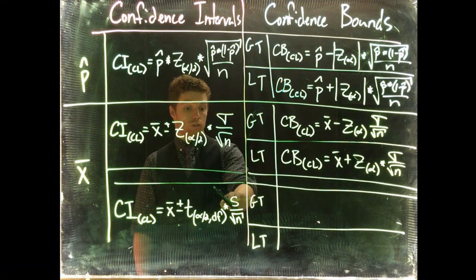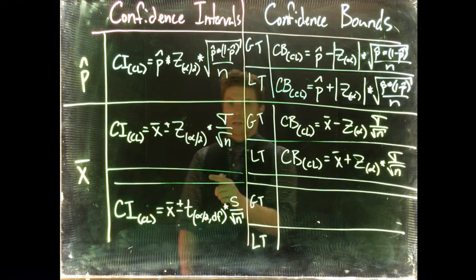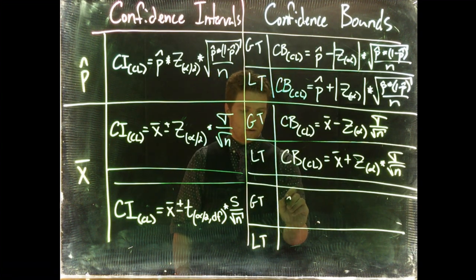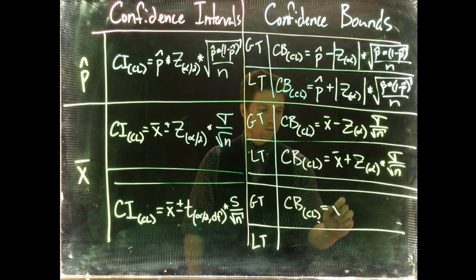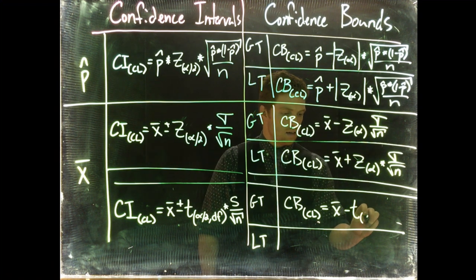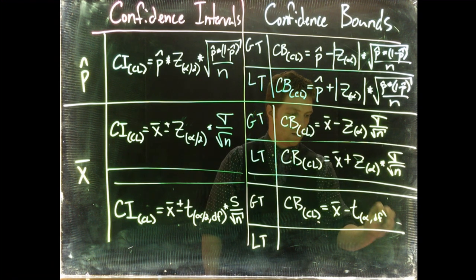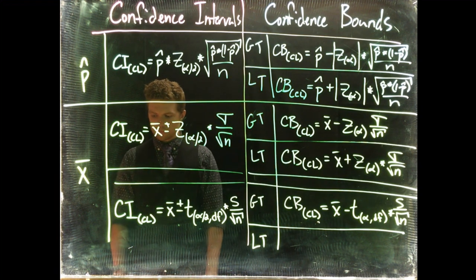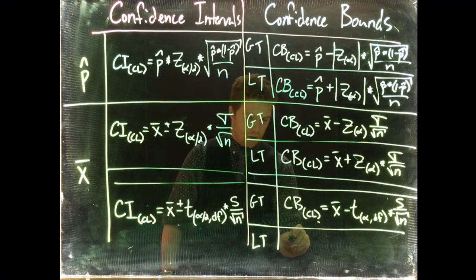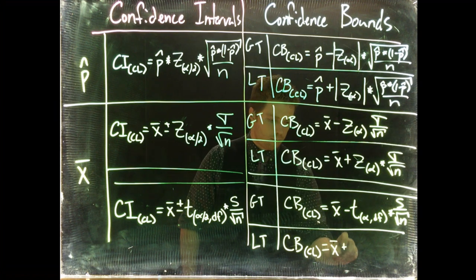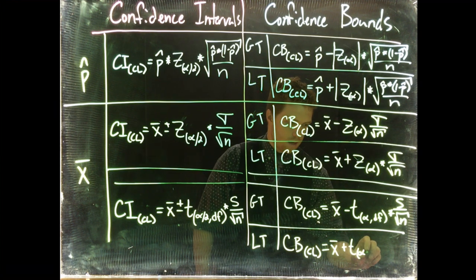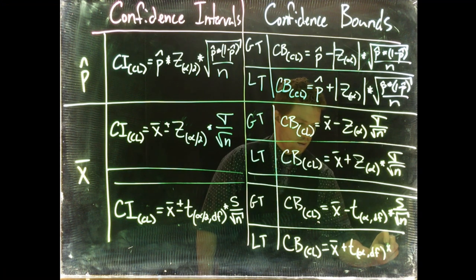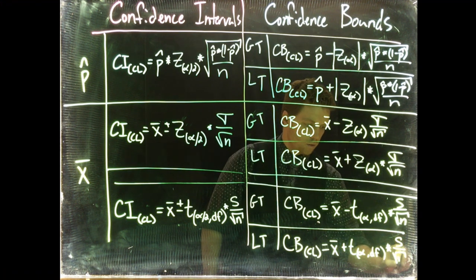Since we're using the sample standard deviation, we can use the t distribution. For the greater than confidence bound, we have x-bar minus t(α, degrees of freedom) multiplied by s divided by the square root of n. And the final equation: confidence bound equals x-bar plus t(α, degrees of freedom) multiplied by s divided by the square root of n.